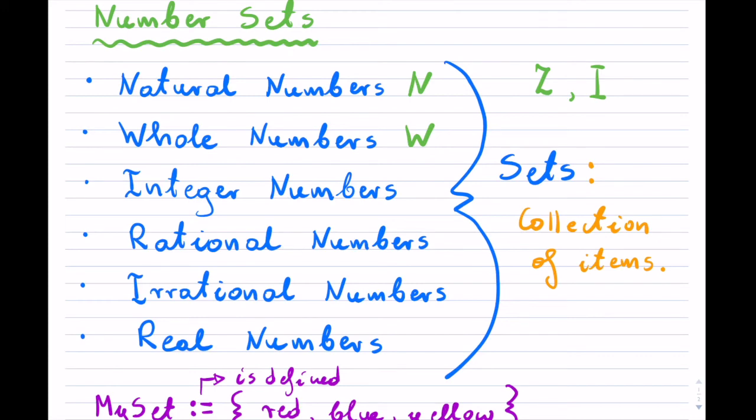For rational numbers, since we kind of run out of letters, we use the symbol Q. For irrational numbers, we use the Q, but we put a little bar over it. And that little bar just means not rational. And then finally, real numbers, or the real set, is designated with a capital R.